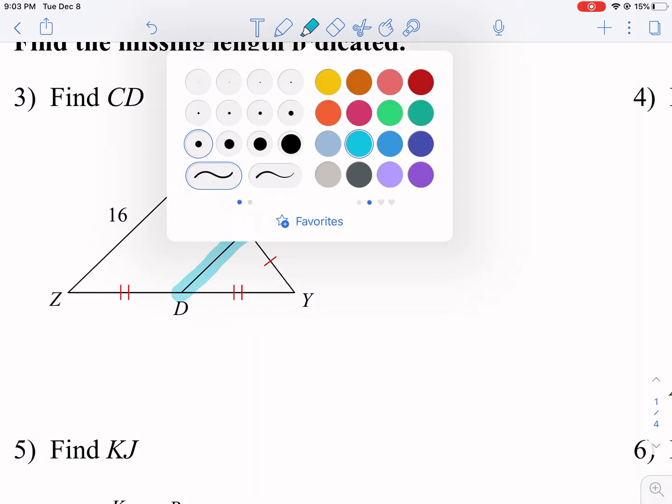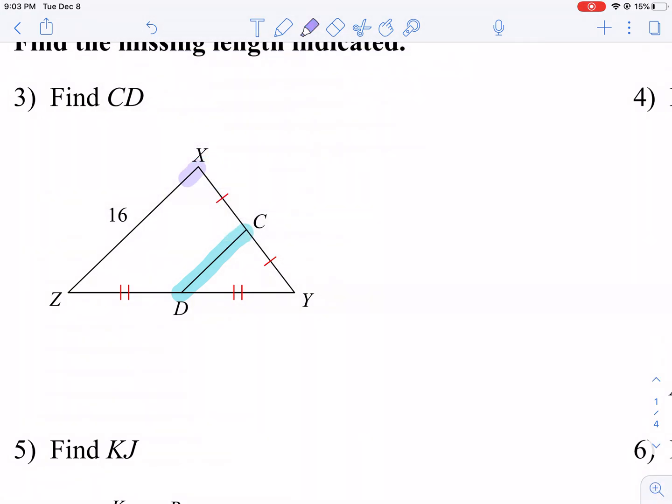Well, if it's a mid-segment, then that means it's going to be half the length of the long side that it's parallel to. So it's parallel to this 16 side, so it's going to be half of that, it's going to be eight.